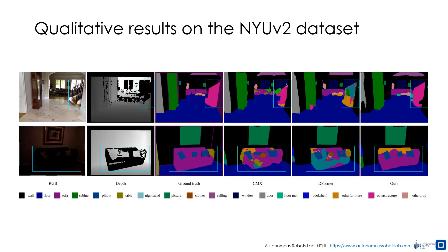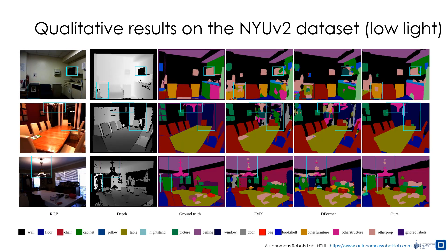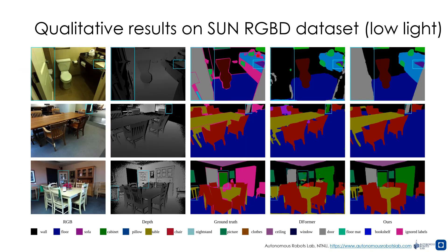Finally, we show qualitative results of our method on the NYUV2 and SUN RGBD datasets under both normal and low-light conditions. They demonstrate that our method can successfully exploit depth features to segment objects even subject to low-light conditions and accordingly high uncertainty regarding an object's appearance.